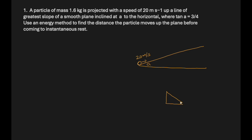Since sin and cos are needed, we use the triangle where tan a = 3/4, meaning opposite = 3, adjacent = 4. By the Pythagorean theorem, the hypotenuse = √(9 + 16) = √25 = 5. Therefore sin a = 3/5.